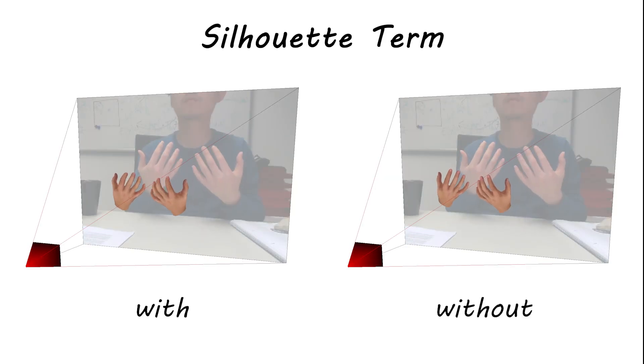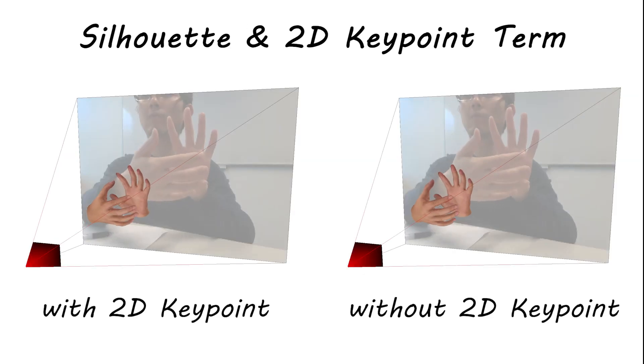We perform an ablation study to validate different design choices for our method. Without the silhouette term, poses with self-occlusion are not properly reconstructed and exhibit limited articulation as the pose does not need to explain hand boundaries. The 2D keypoint terms additionally encourage correct articulation when it is ambiguous whether the silhouette is a hand boundary or an occlusion boundary.